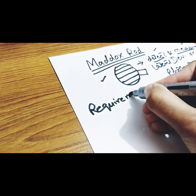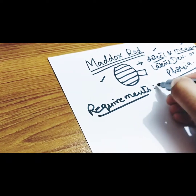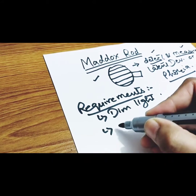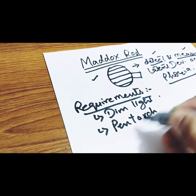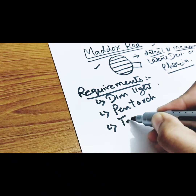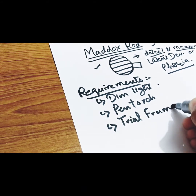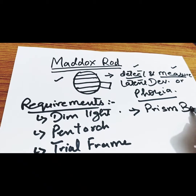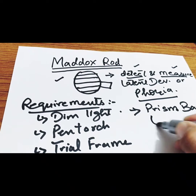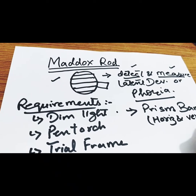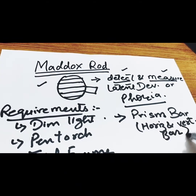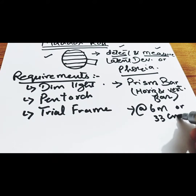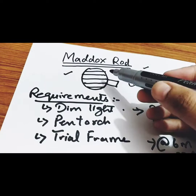To perform this test we need dim light, a pen torch, a trial frame in which the Maddox rod is placed, and prism bars — both horizontal and vertical prism bars — to detect and measure horizontal and vertical deviations. This test is performed at 6 meters or 33 centimeters with best corrected visual acuity.